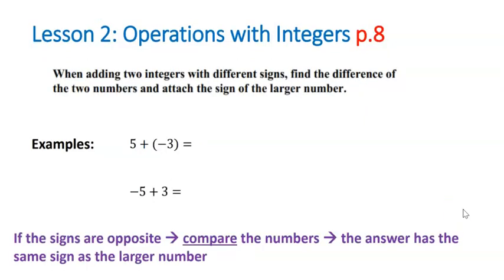So that's pretty straightforward, but when the integers have different signs, we actually are going to have subtraction in disguise. So when the signs are different, we're going to find the difference between the numbers and attach the sign of the larger number. Let's take a look at this first example. We have 5, which is a positive 5, plus a negative 3. So I want you to ask yourself the question, which one do I have more of? Do I have more positives or negatives? We can see that we have more positives.